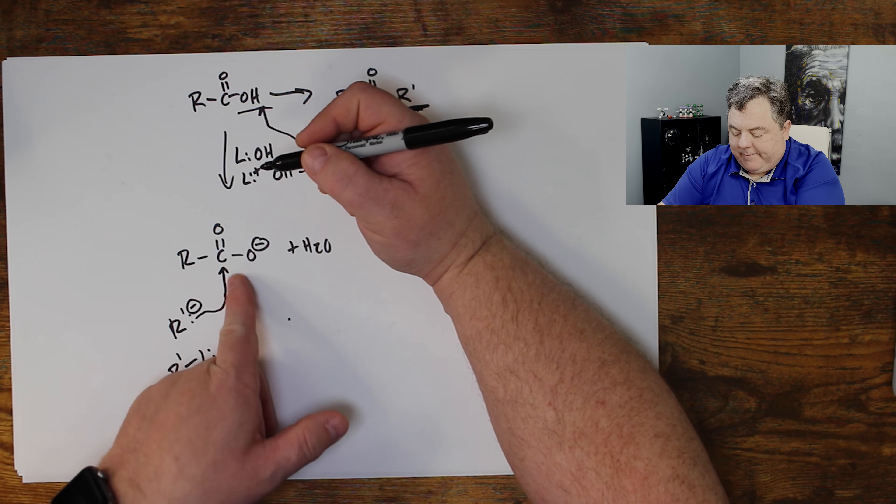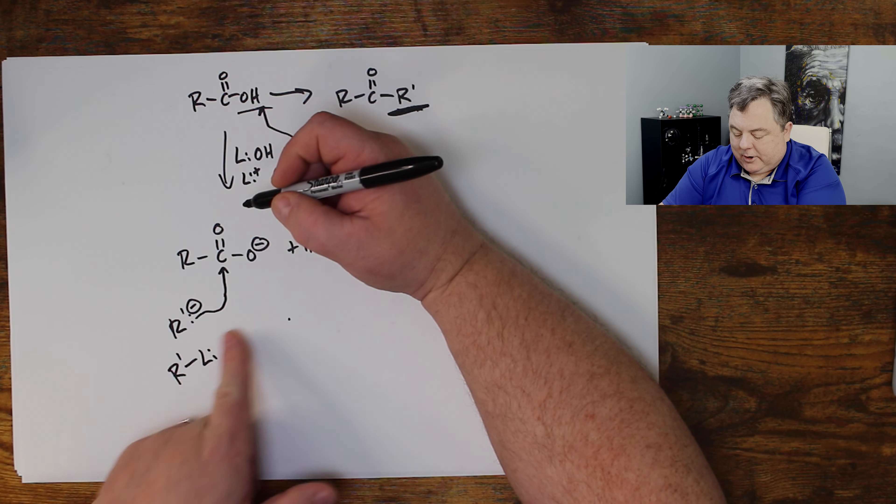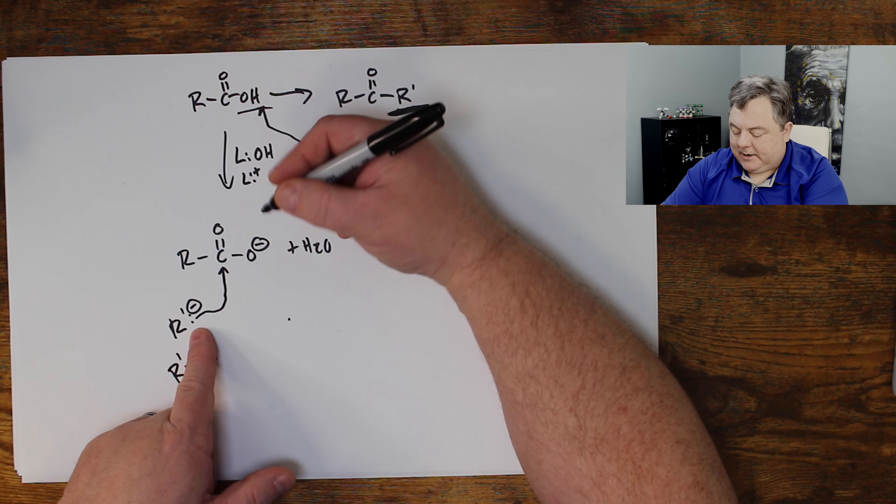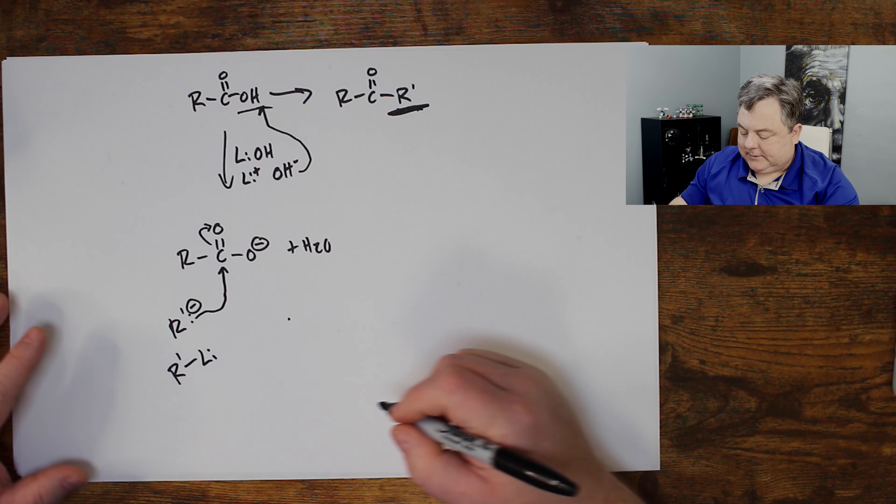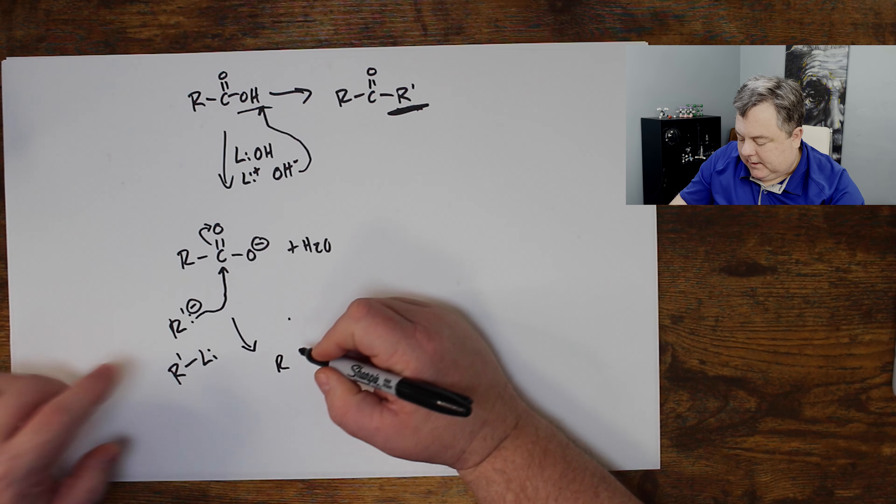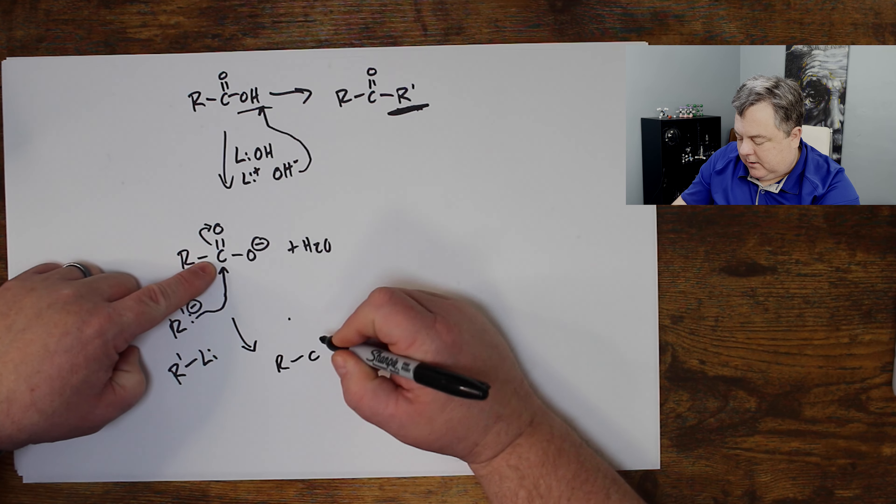It's going to attack. Now where's the most positive spot on this? It's the carbonyl. But if I give a bond to the bottom side of that carbonyl from these electrons, that would be too many bonds on that carbon, five bonds. So I have to fix it by moving these electrons up to the oxygen.